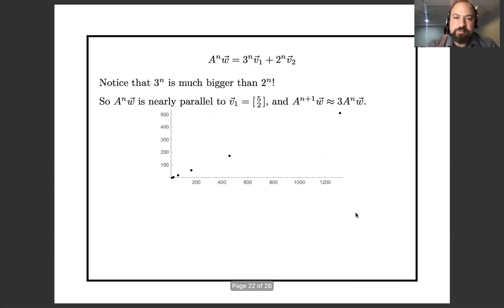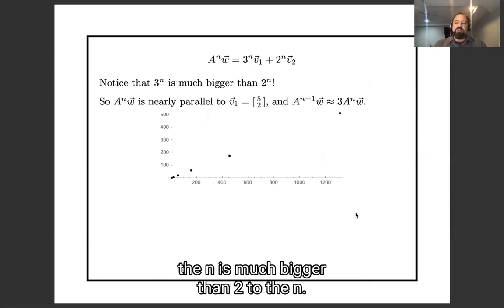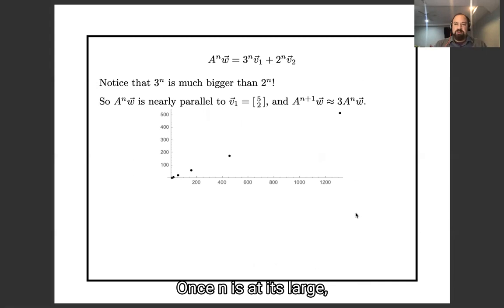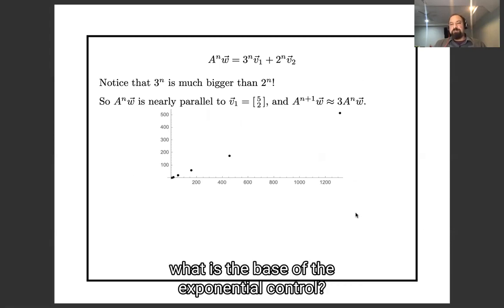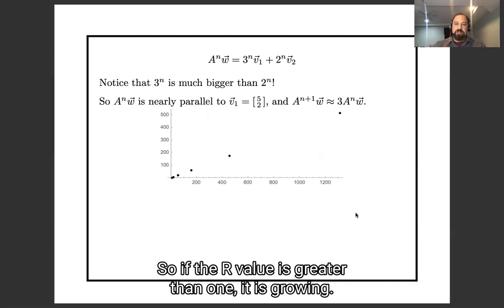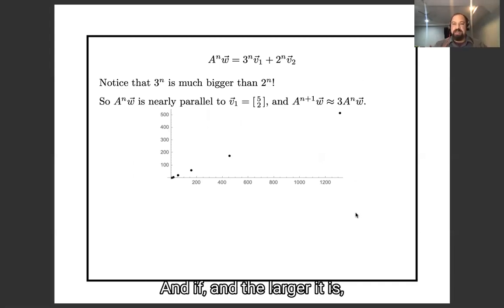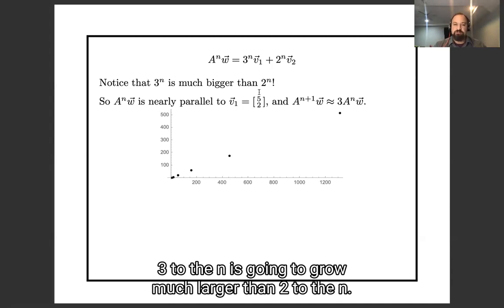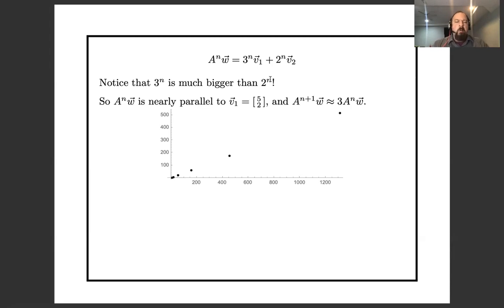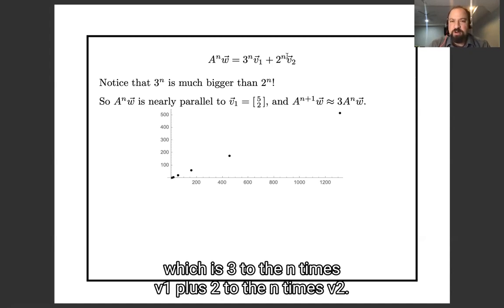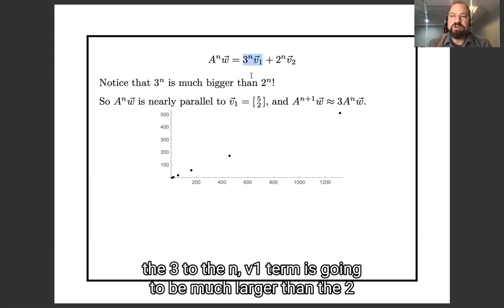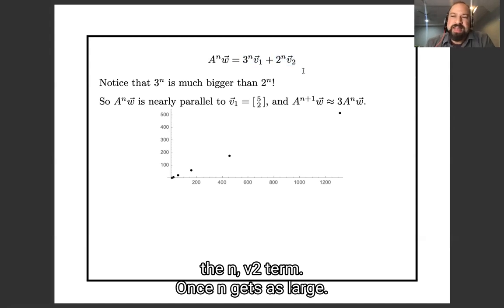So why is this happening? It's happening because 3^n is much bigger than 2^n, once n is at all large. We've all heard lots of talk about the r value of diseases this year. The r value is the base of the exponential controlling how fast the disease grows. If the r value is greater than 1, it is growing. And the larger it is, the faster it is growing. So since 3 is larger than 2, 3^n is going to grow much larger than 2^n. So this vector A^n w, which is 3^n times v₁ plus 2^n times v₂, this first term, the 3^n v₁ term, is going to be much larger than the 2^n v₂ term, once n gets at all large.